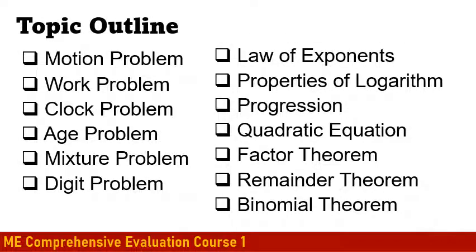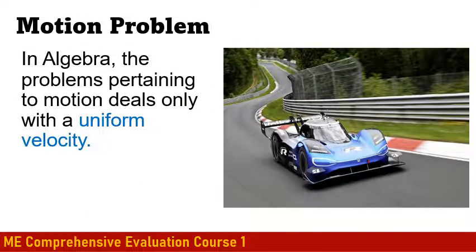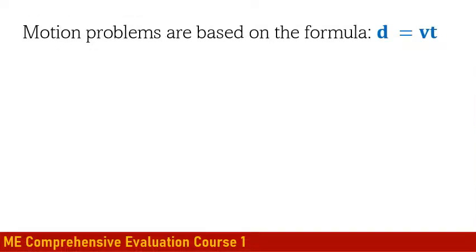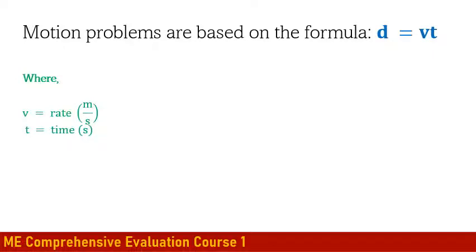This will be the outline of this presentation. Let's start first with the motion problem. In algebra, problems pertaining to motion deal only with uniform velocity. Motion problems are based on the formula: distance is equal to the product of velocity and the time interval, where V is the rate in meters per second and T is the time in seconds. This formula is only applicable when velocity is uniform.